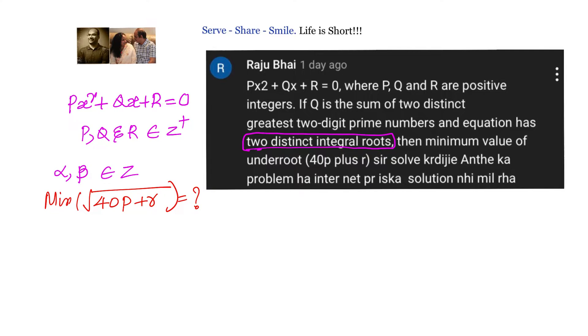We have been given that p, q, r are positive integers and q is the sum of two distinct greatest two-digit prime numbers. What are the greatest two-digit prime numbers? One is 97 and just below that is 89. So q equals to 186.